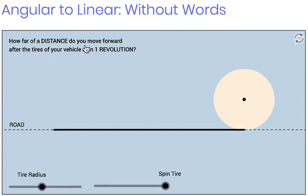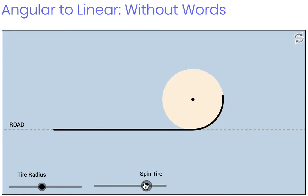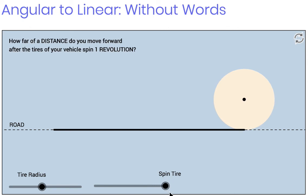How far of a distance do you go forward after the tires of your vehicle spin one revolution? Well, you move forward a distance equal to the circumference of the circle. And so I like to have kids discover without words that principle and use that principle further within the problem-solving process.